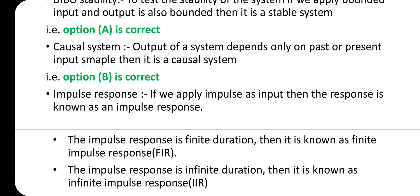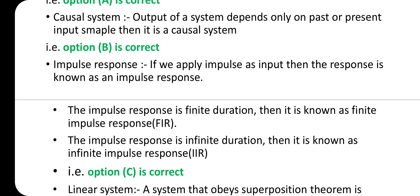Causal system: Output of a system depends only on past or present input samples. Then it is a causal system. Option B is correct.